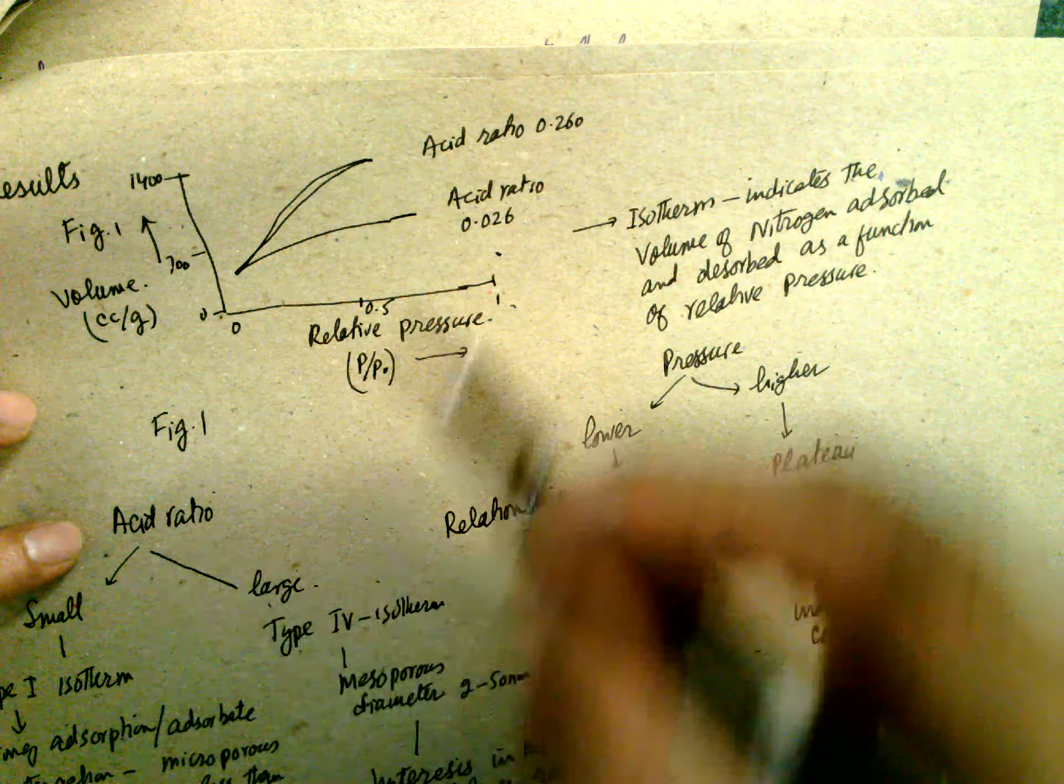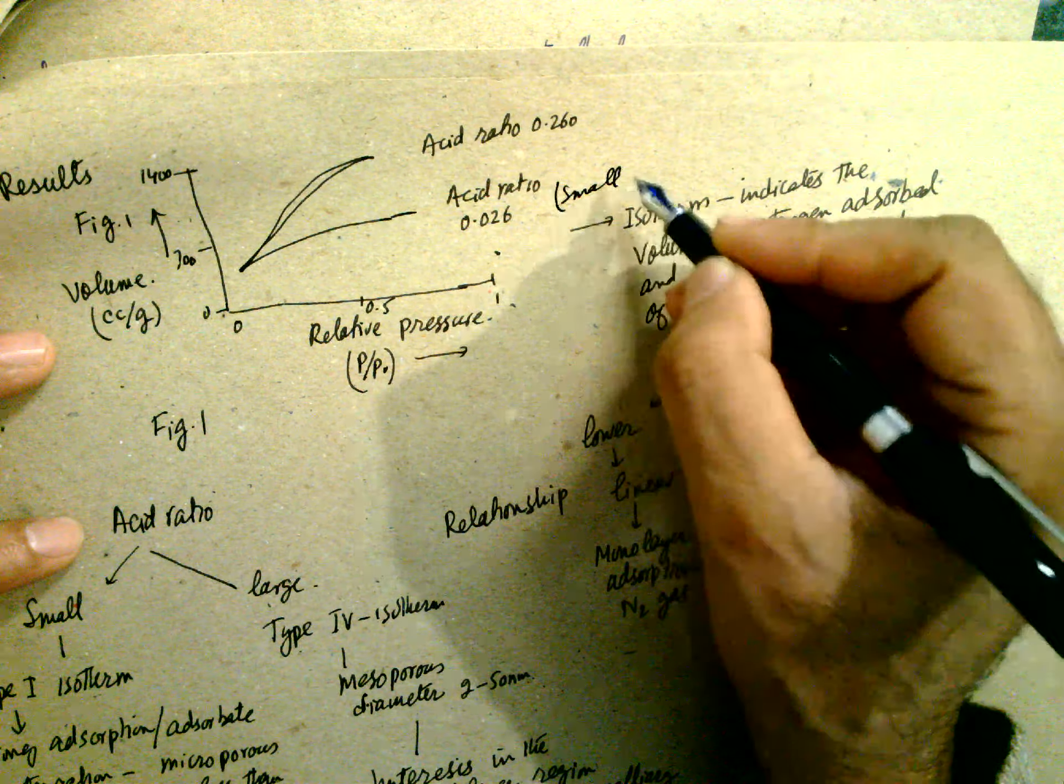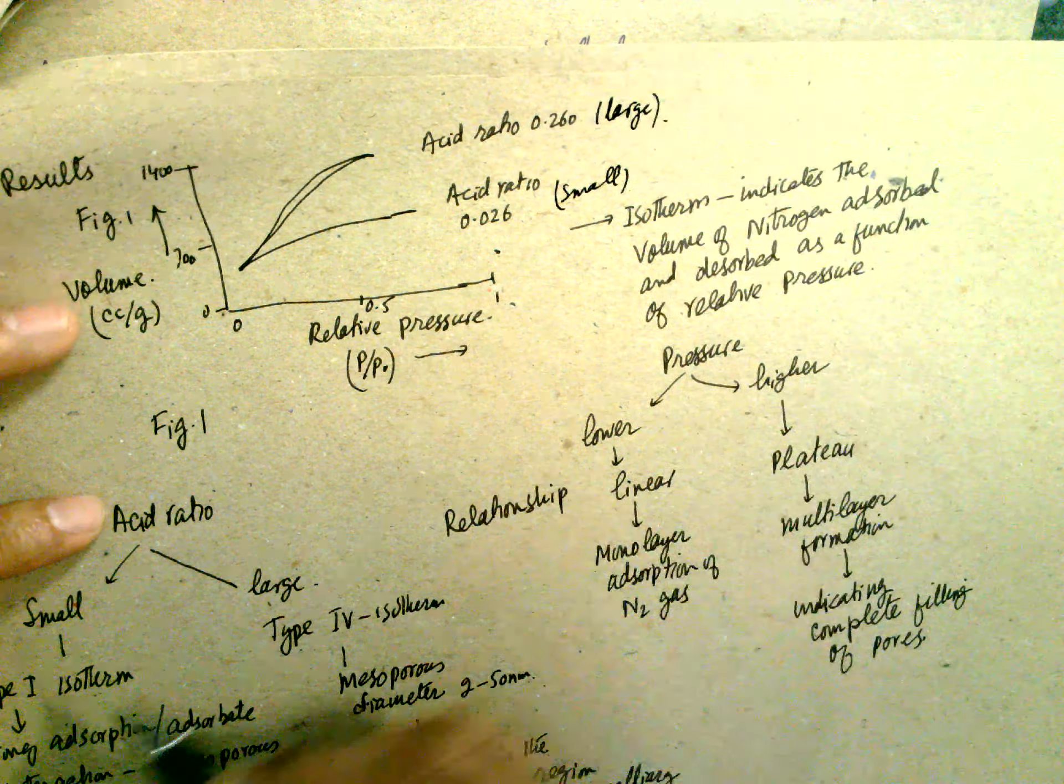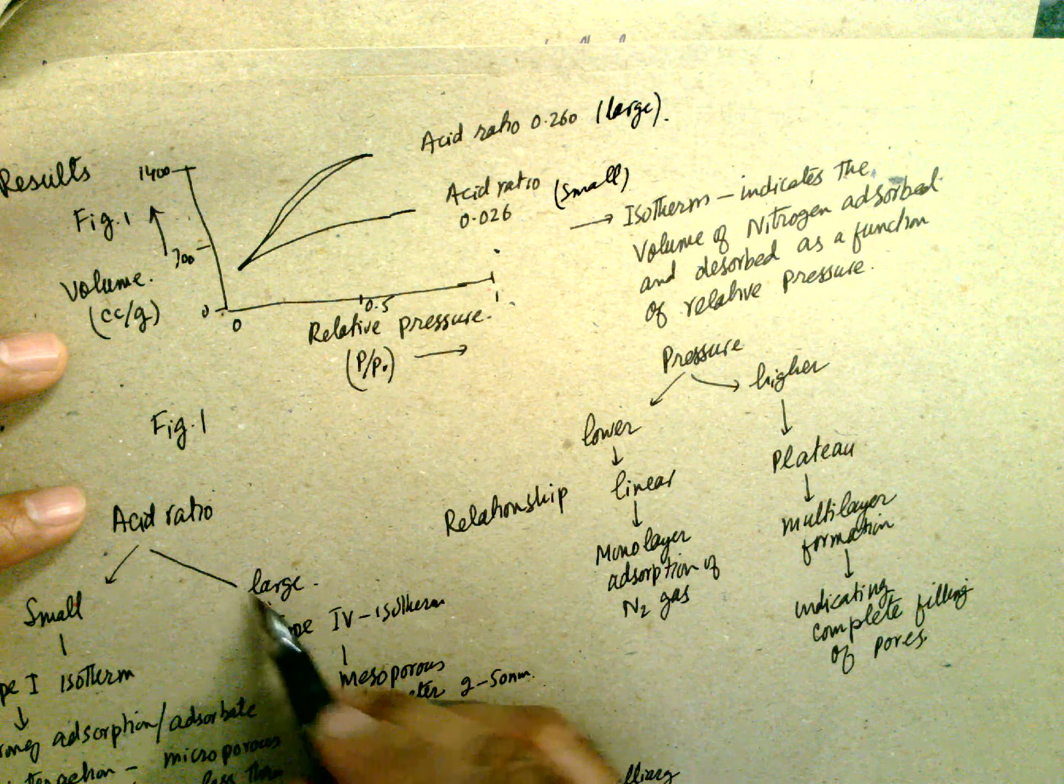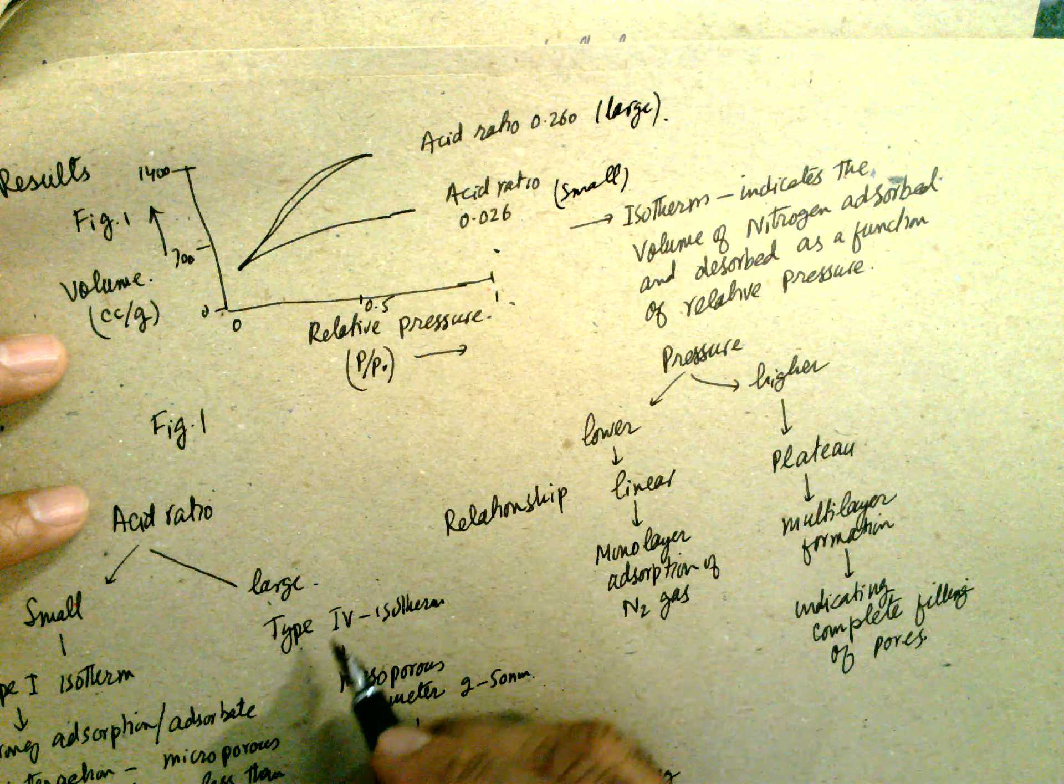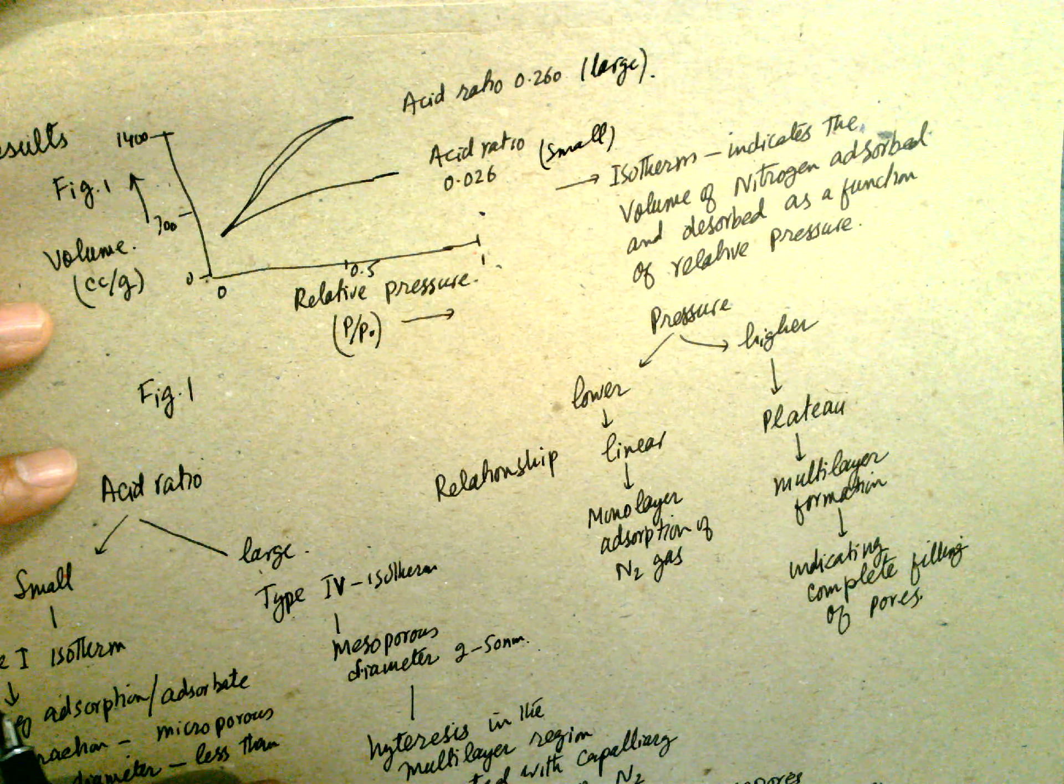It's a monolayer. This plateau forms indicating the complete filling of the pores. Acid ratio is small, this is small, and this is large. Type one and the large is type IV-VI.